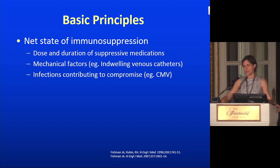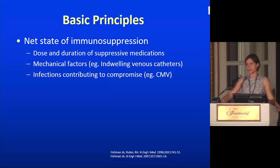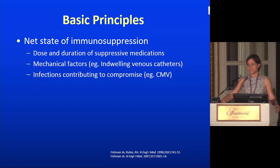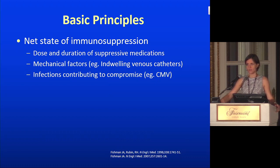The last thing to think about is whether they have some other infection that has made them immunocompromised. The classic example is HIV. But in transplant patients, CMV actually can make patients more vulnerable to other infections. Once they have active CMV viremia, you have to remember they're going to be more vulnerable to other things.